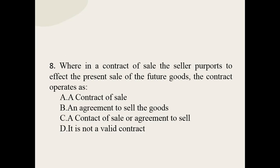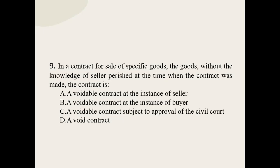Q8: Where in a contract of sale the seller purports to effect the present sale of future goods, the contract operates as: a contract of sale; an agreement to sale the goods; a contract of sale or agreement to sale; or it is not a valid contract. The correct option is: an agreement to sale the goods.